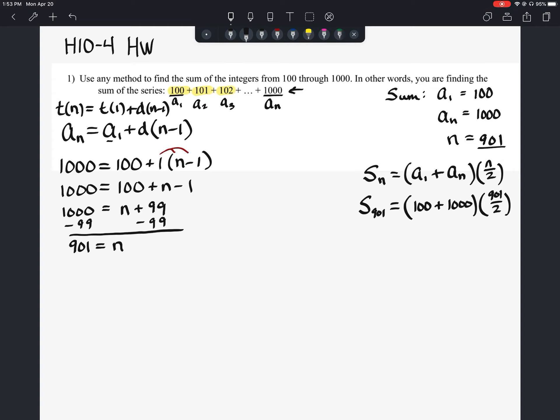And then you could probably, you know, if you need to, you can get out a calculator to do some of this. I know that when I add these two together, this would be 1100 times 901 divided by 2. Well, let's just treat it like it's a fraction. We can do a little bit of this in our head. Half of 1100 would be 550. So we have 550 times 901.